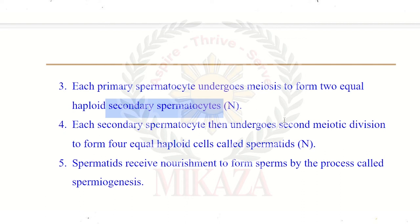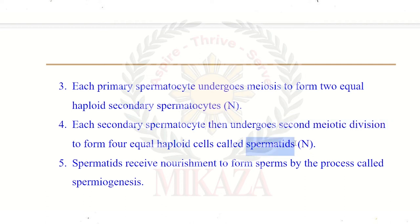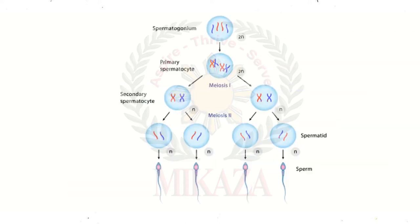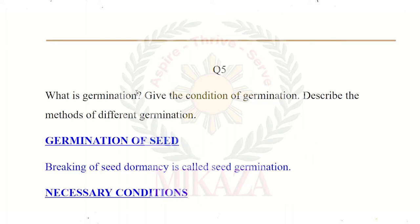After that, all the secondary spermatocytes undergo a second meiotic division, producing cells called spermatids. Sertoli cells provide nourishment — the food necessary for the developing cells. When their needs are completed, they convert into spermatozoa. The whole process is called spermatogenesis: spermatogonia → primary spermatocytes → secondary spermatocytes → spermatids → mature spermatozoa.